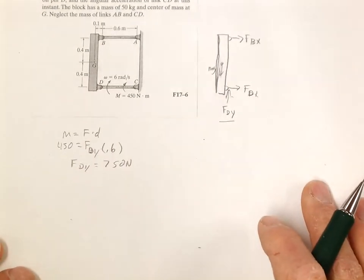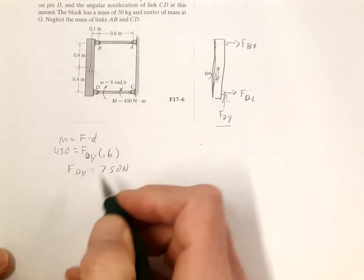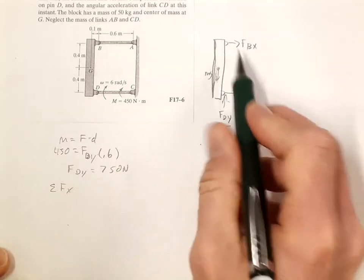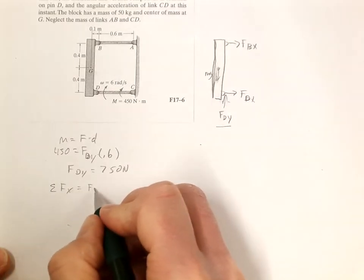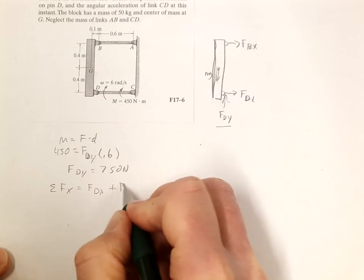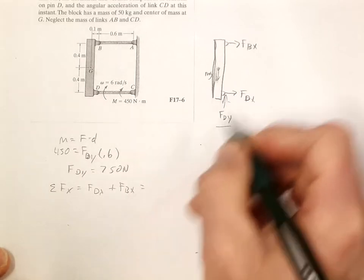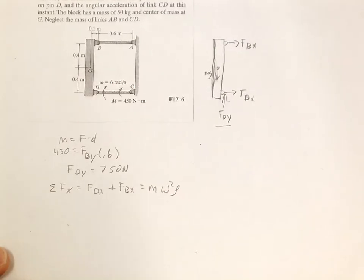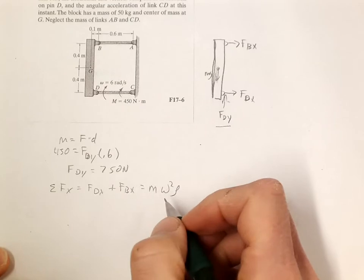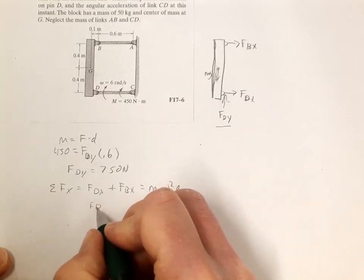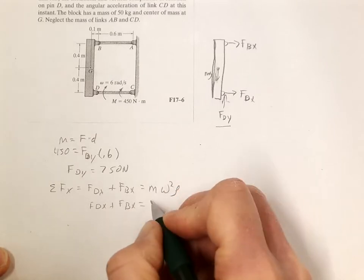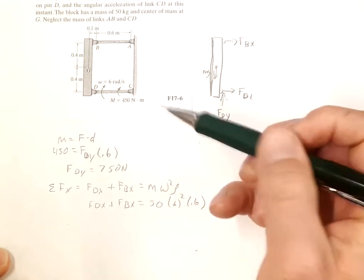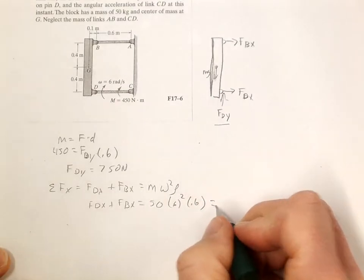Now since we have that, we can do the sum of the forces in the X direction. We have FDX plus FBX, and those combined are going to be equal to M omega squared rho, same thing as MV squared over R. So FDX plus FBX equals 50 times 6 squared times 0.6, which equals 1080.